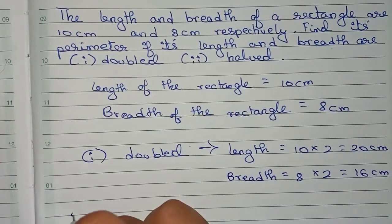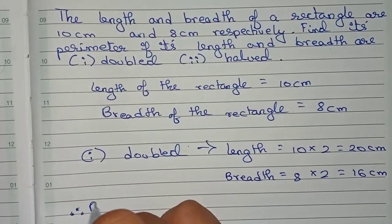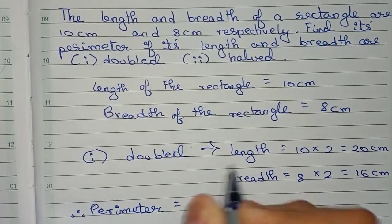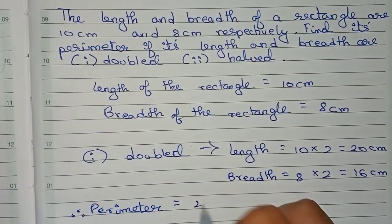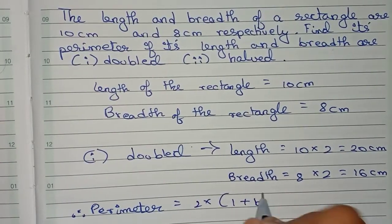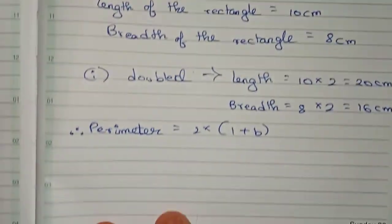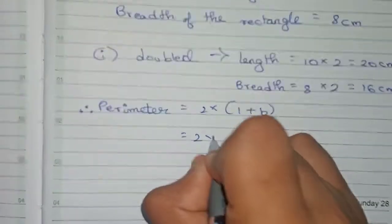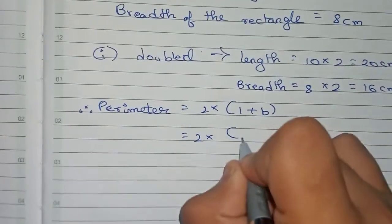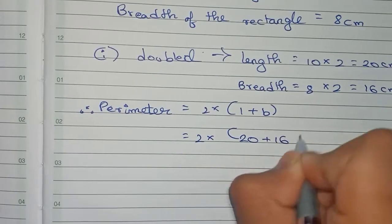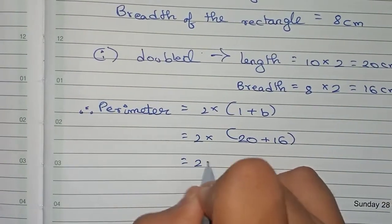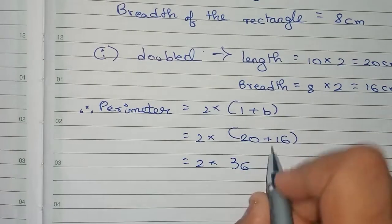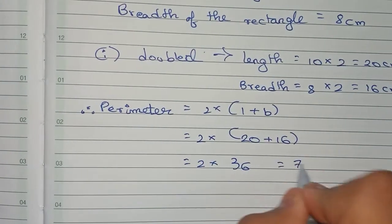So now find the perimeter. Therefore, perimeter equals the formula 2 into length plus breadth, which equals 2 into 20 plus 16, which equals 2 into 36, that is equal to 72 centimeters.